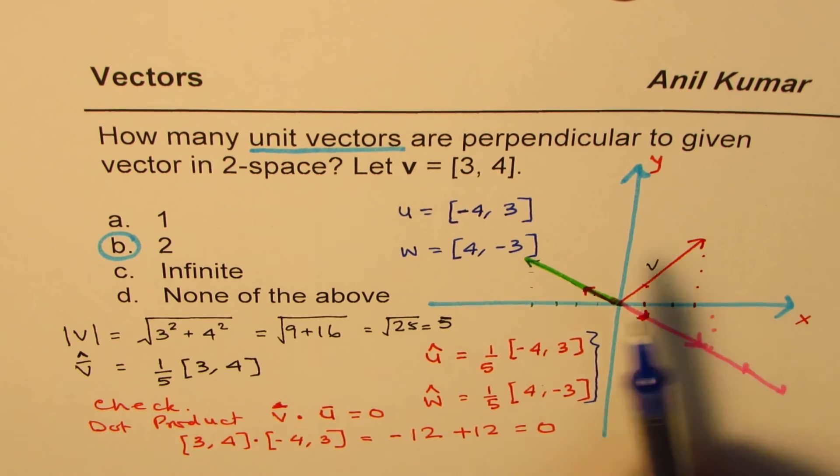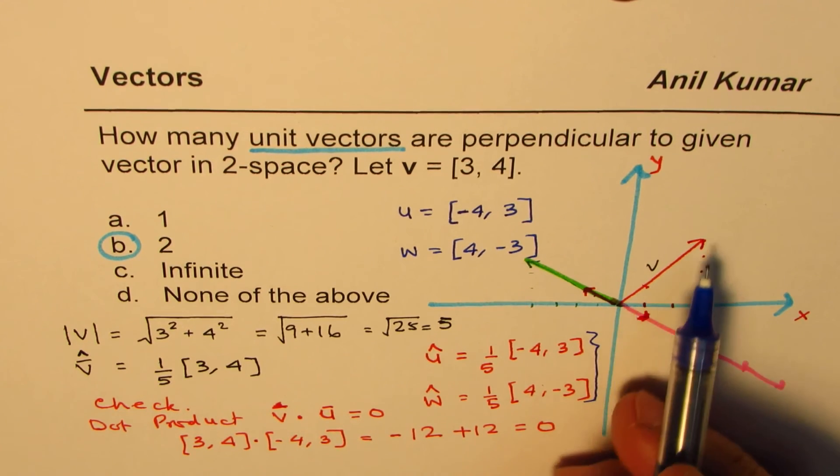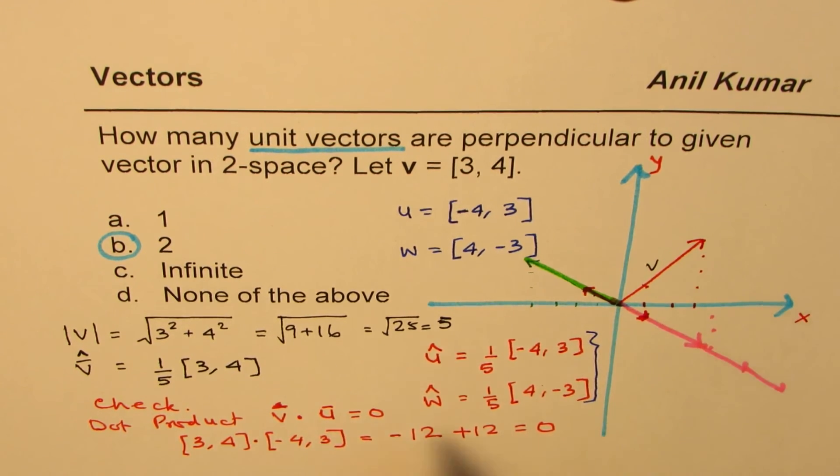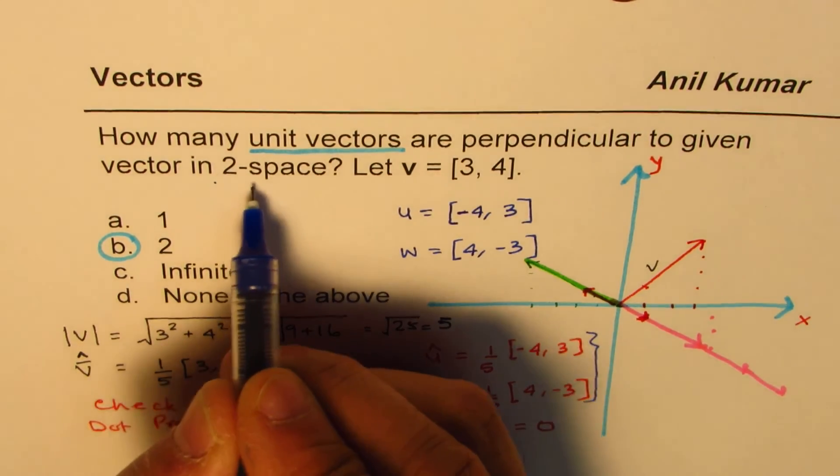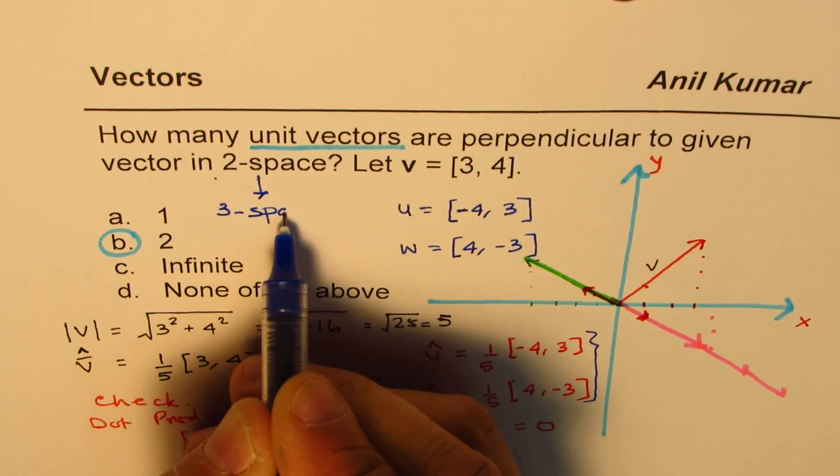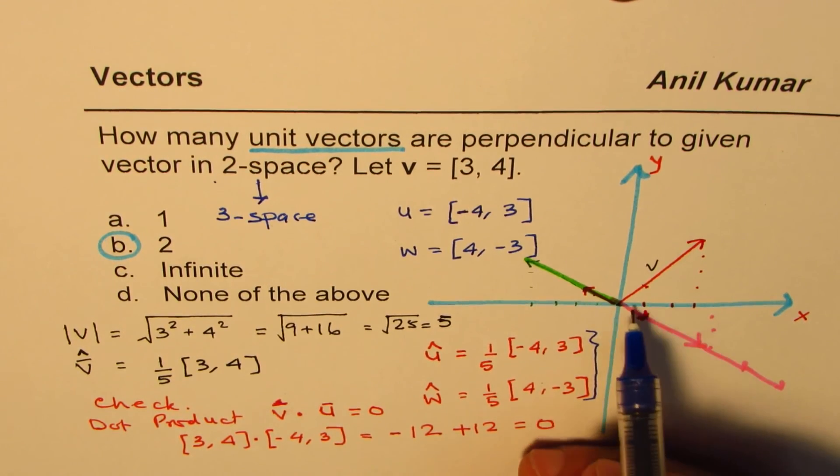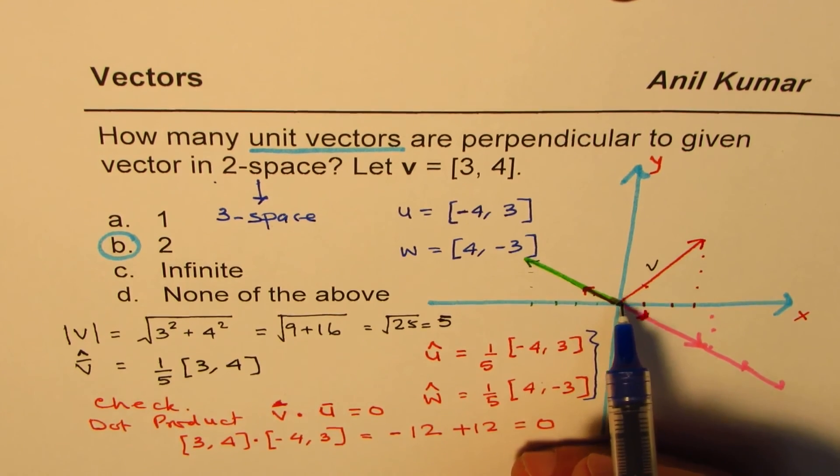So remember one thing: that in 2-space, there can be only two unit vectors perpendicular to a given vector. Now let me extend this question. If I extend this to 3-space, then what happens?